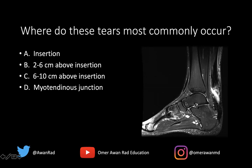Looking at this sagittal T2 FATSAT image, this is the tibia, the talus, the calcaneus. Here we have this dark structure — the Achilles tendon — inserting onto the calcaneal tuberosity. We can see T2 hyperintense fluid signal within the substance of the tendon. It's a full thickness tear because it involves the entire thickness from the anterior to the posterior dimension of the tendon. This is the most common place where the tendon tears, as this is an area of hypovascularity 2 to 6 centimeters above the insertion — by far the most common location for Achilles tendon tears.